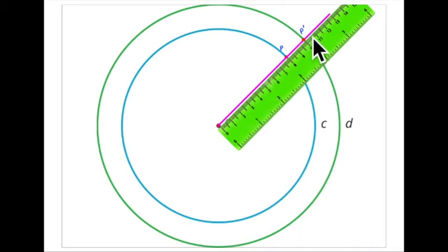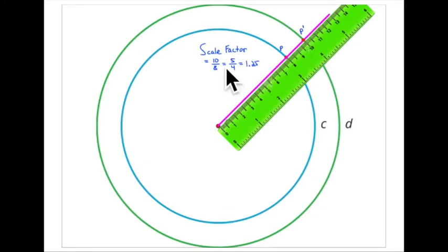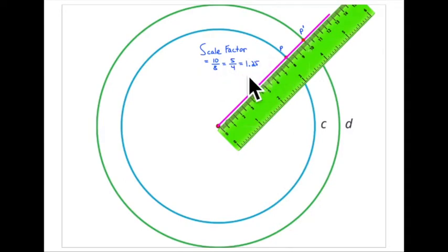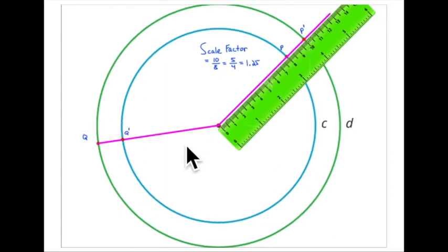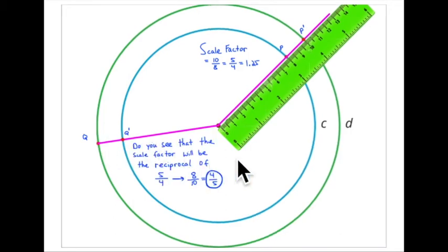It's making it larger. Ten-eighths simplifies to five-fourths, or if you want to use decimals, one and twenty-five hundredths. Then, what takes point Q to Q prime? Now you make it smaller.